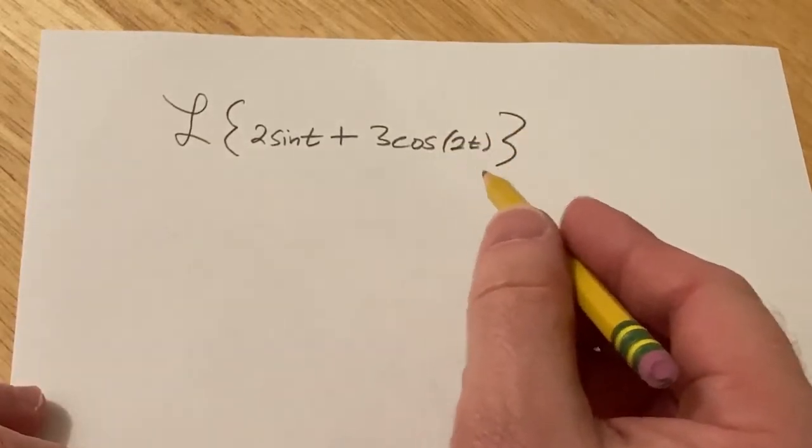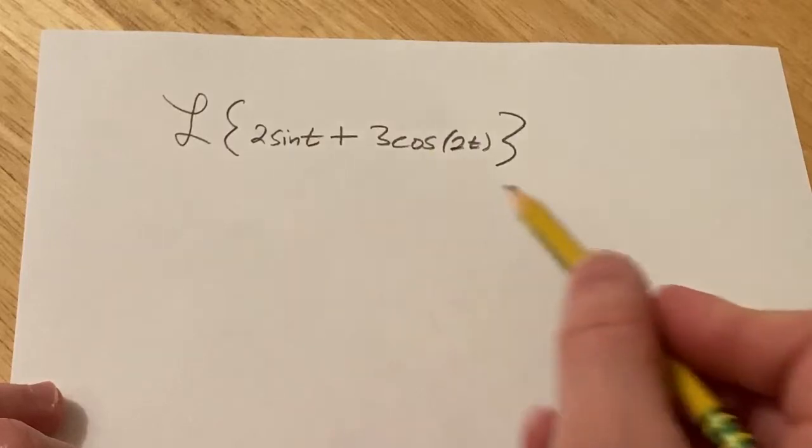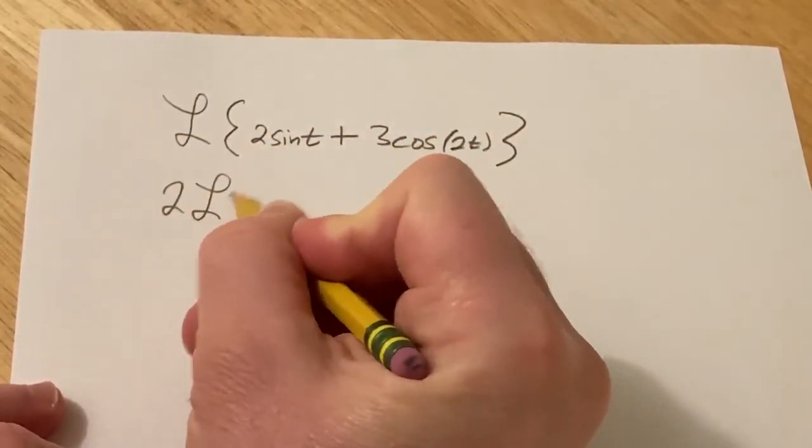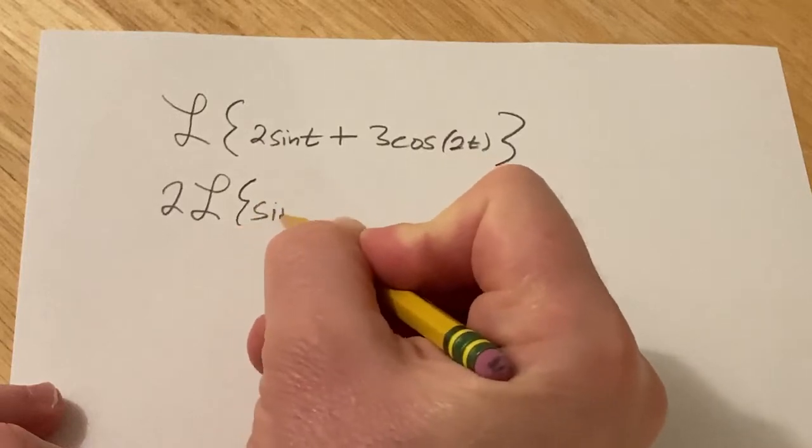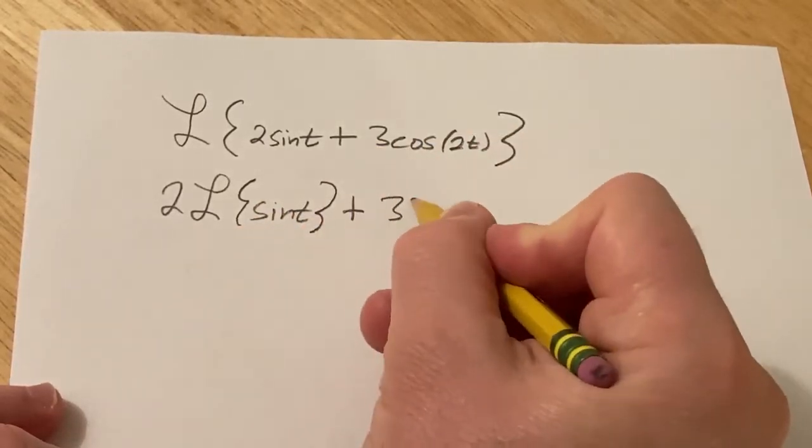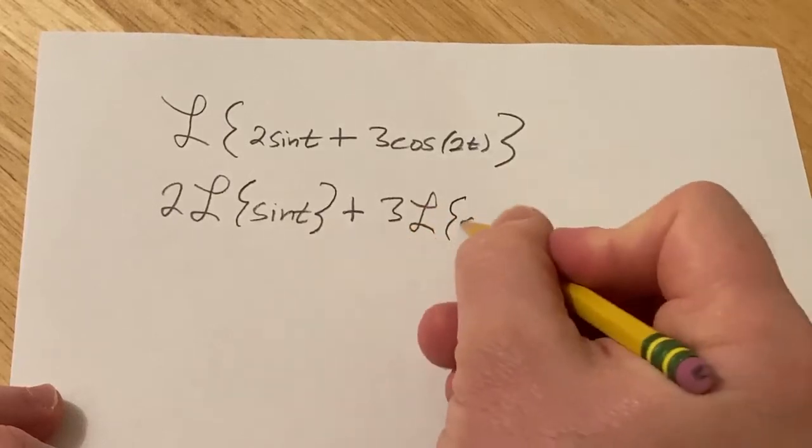So the first step is we're going to use the fact that the Laplace transform is linear. So basically it's going to be 2 times the Laplace of sine t plus, and then you can pull the constants out of the Laplace, 3 times the Laplace of cosine 2t.